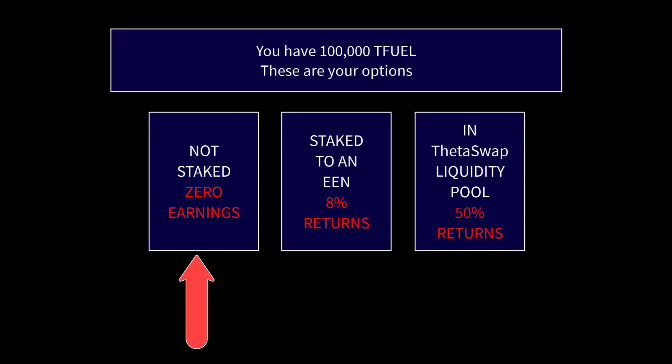You can remain liquid and not stake it, in which case if the price goes up and you want to take profits you can instantly sell it and capture your profits. But because you're not earning any income from it when it's not staked, the other option would be to stake it to an elite edge node.